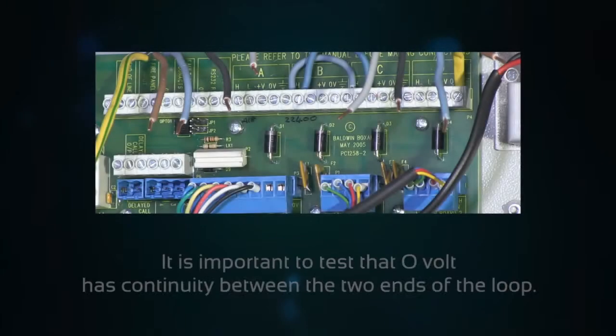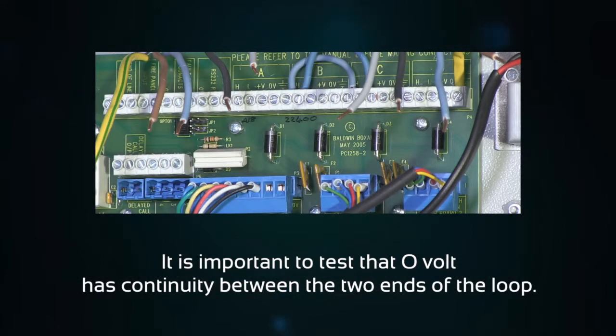The most important test, once the remotes are connected, is to ensure the 0 volts blue conductor has continuity between the two ends of the loop.